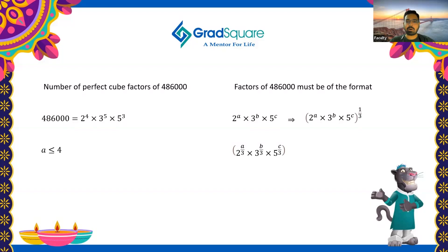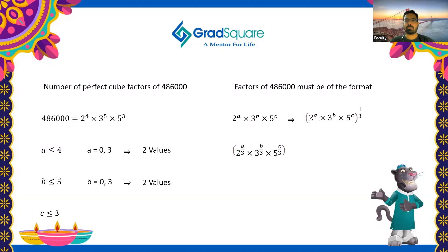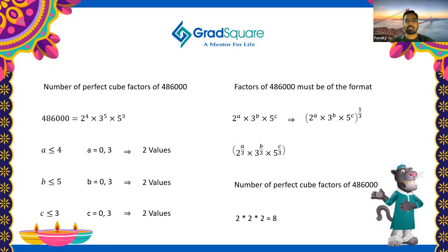For a: it must be ≤ 4 and divisible by 3, so the possible values are 0 and 3 — two values. For b: it must be ≤ 5 and divisible by 3, so the possible values are 0 and 3 — two values. For c: it must be ≤ 3 and divisible by 3, so the possible values are 0 and 3 — two values. Therefore the number of perfect cube factors of 486,000 is 2 × 2 × 2 = 8 factors.